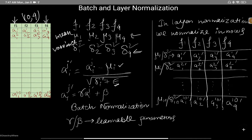We also have two learnable parameters, gamma and beta. These are used to scale the normalized input according to the loss function. We multiply gamma with the normalized value A_ij-dash and then add beta. These two parameters are learned during backpropagation, giving the final A_ij-dash for each feature.